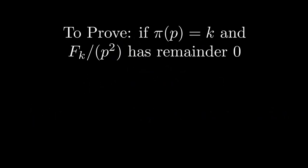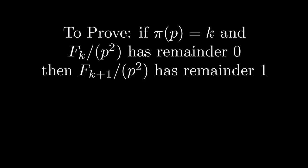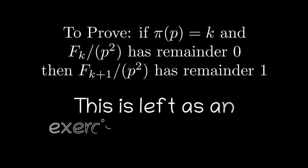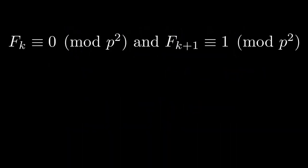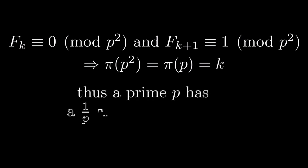It's not too hard to prove that if f sub k is 0 mod p squared, then the next Fibonacci number, f sub k plus 1, has to be 1 mod p squared. We won't do the whole proof here, but the trick is to calculate the Fibonacci sequence backwards mod p squared until you get to the beginning. This would make the Pisano period of p squared also k, so any prime p should have a 1 over p chance of being a Wall-Sun-Sun prime.